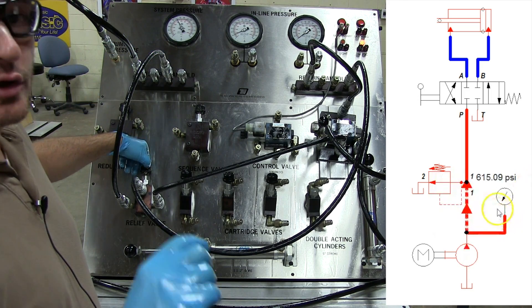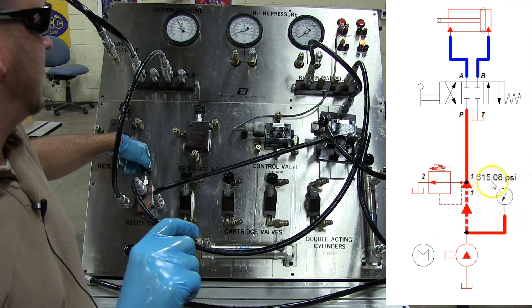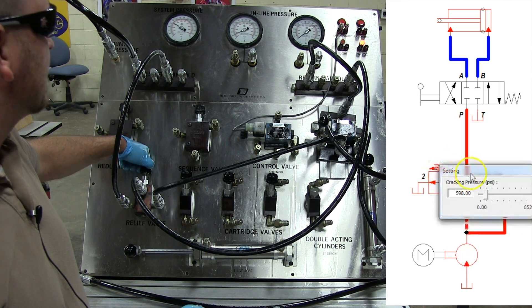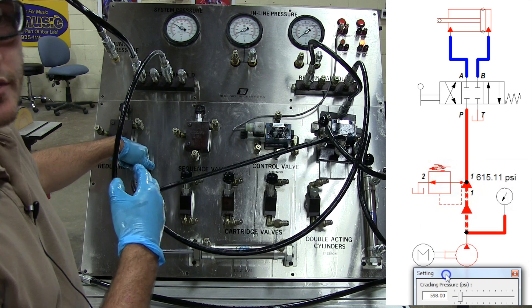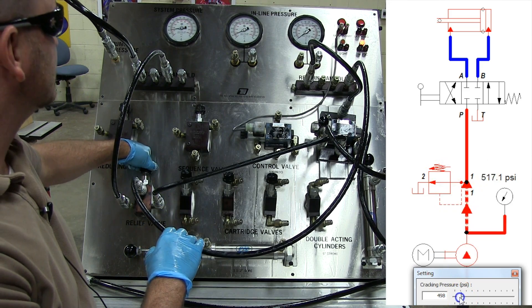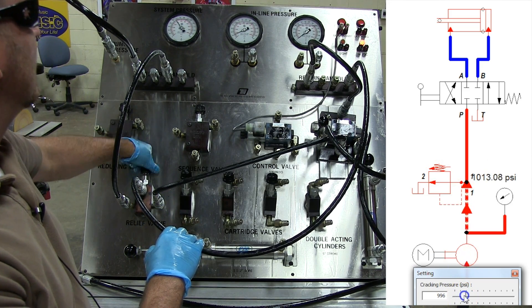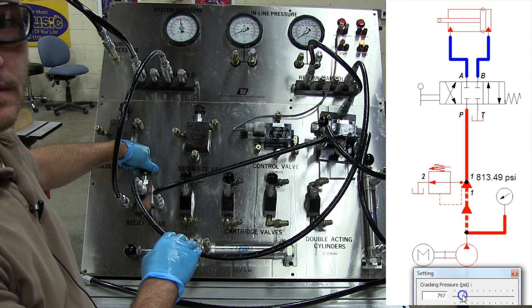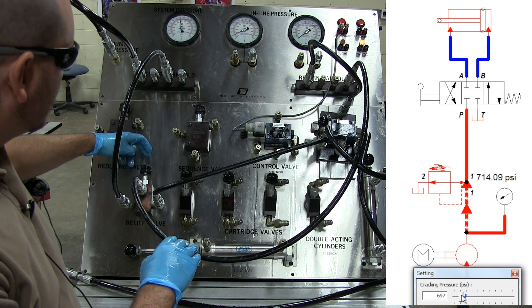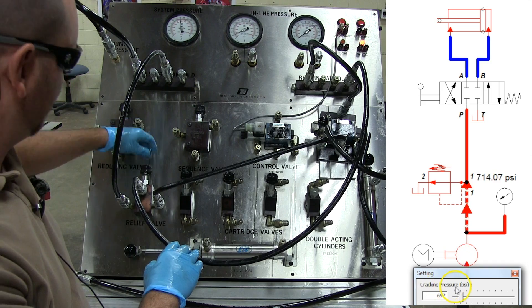So if I loosen up that biasing spring, I can bring that down to 400. I can bring it down to 200. I can bring it up to 700. And all by adjusting that biasing spring.